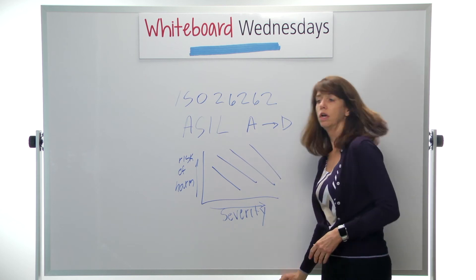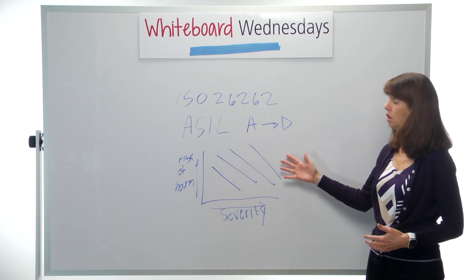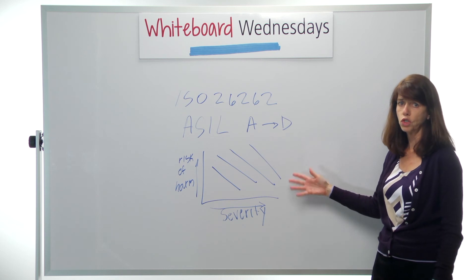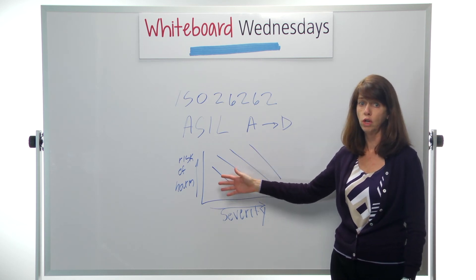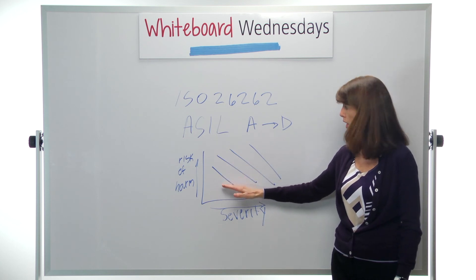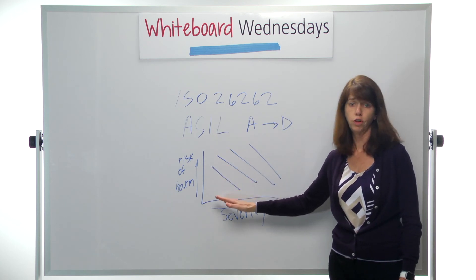So for ASIL D, you clearly need a lot more planning. It takes a lot more effort to get certified at that level than it would for an ASIL A, which has very low potential of risk or severity of risk.